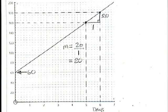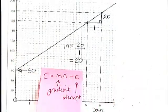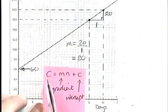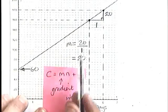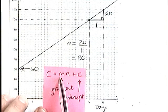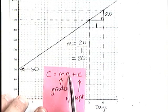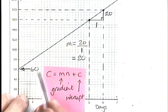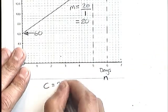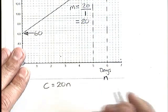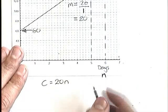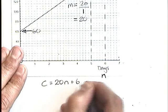And so if we go back to our form of our equation, we're going to write down that the cost is equal to 20, which is the gradient, times the number of days, plus 60. So the equation here, cost equals gradient times whatever is on the x-axis, n, number of days, plus 60.